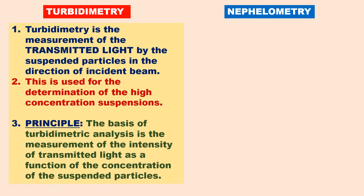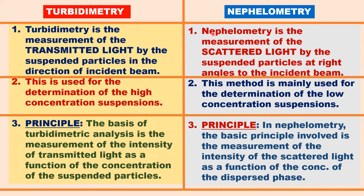These two techniques are related to each other. The only difference is that in turbidimetry, transmitted light is measured by the suspended particles in the direction of the incident beam. In nephelometry, scattered light is measured by the scattered particles at right angles — perpendicular to the incident beam. Turbidimetry is used for determination of high concentration of suspended particles, while nephelometry is used for determination of low concentration of suspended particles.